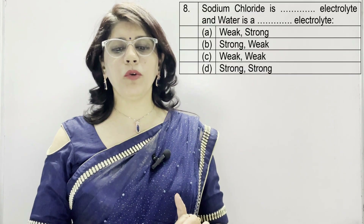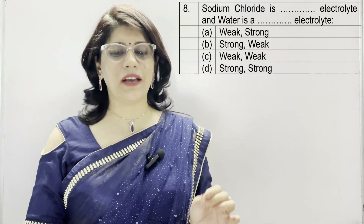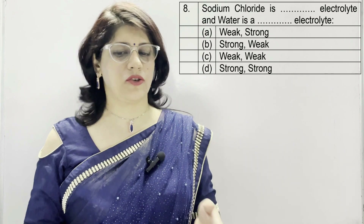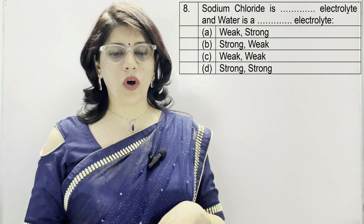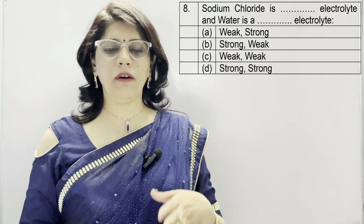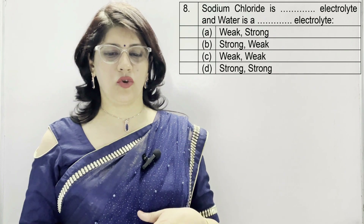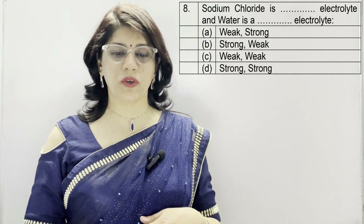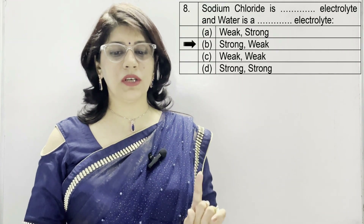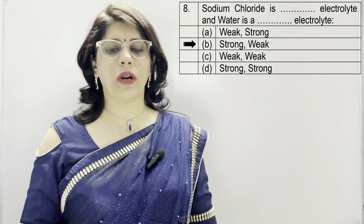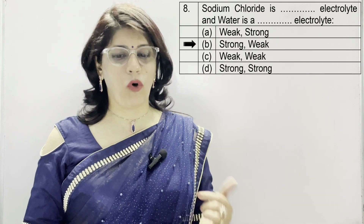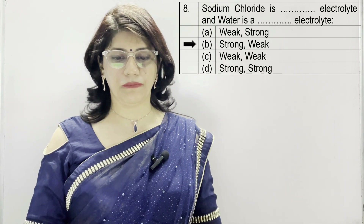Question number 8: Sodium chloride is a dash electrolyte and water is a dash electrolyte. Options: weak and strong, strong and weak, weak and weak, strong and strong. The correct option is B — sodium chloride is a strong electrolyte while water is a weak electrolyte.